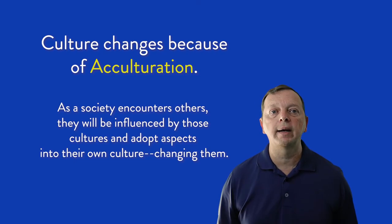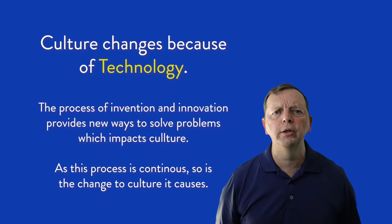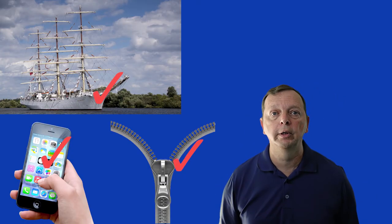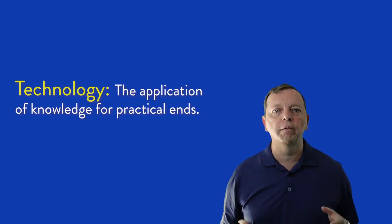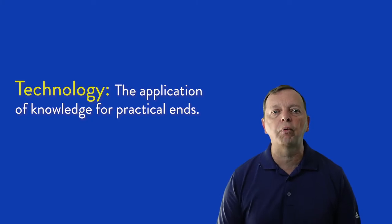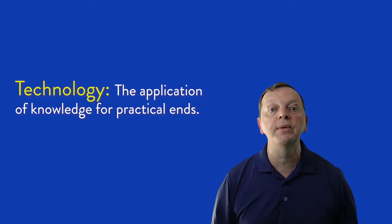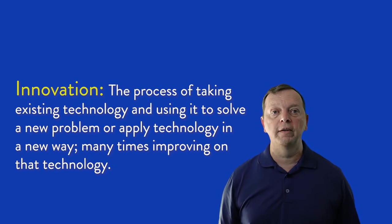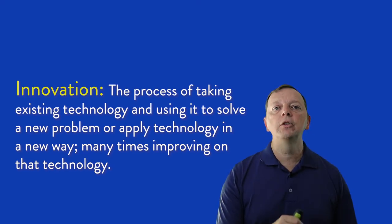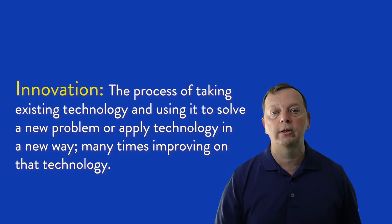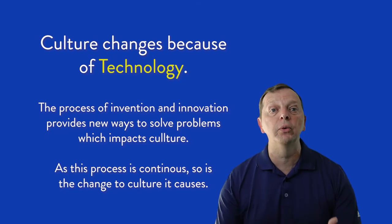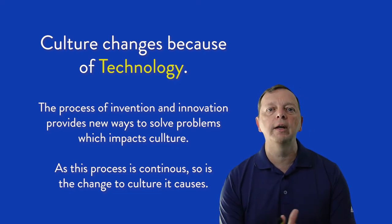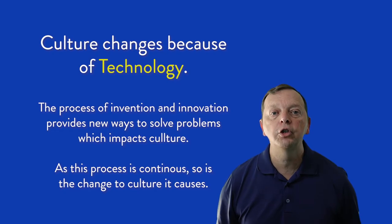The other major factor that makes cultures dynamic and always changing is technology. And what is technology? Let's take a look at these three pictures. Which one do you think is technology? And if you answered all three, you're absolutely right. Technology is the application of knowledge for practical ends — it is mankind's constantly looking to solve problems. And whatever mankind develops to solve these problems is technology. Now, a closely related term is innovation. Innovation is often used interchangeably with invention, but innovation is when someone takes an existing technology and solves a different problem with it or uses that technology differently. The process of innovation usually inspires new invention, and the cycle continues. And because this process of identifying problems, developing technology, and then innovation is continuous, so is the change in culture.